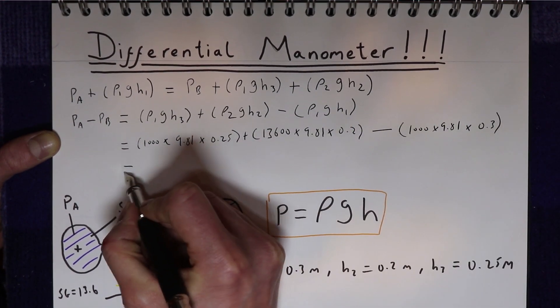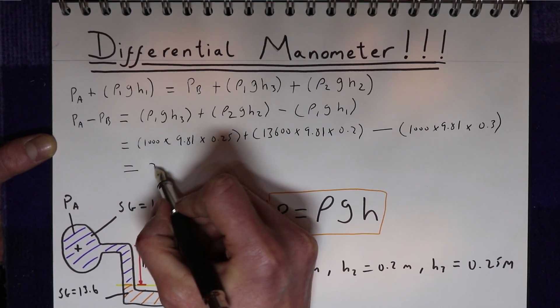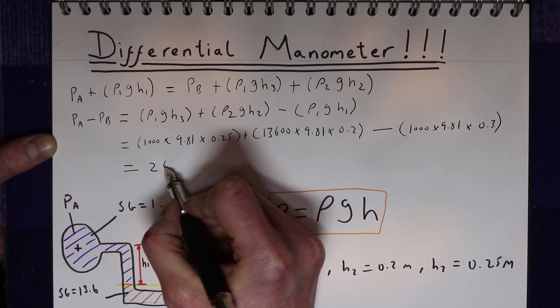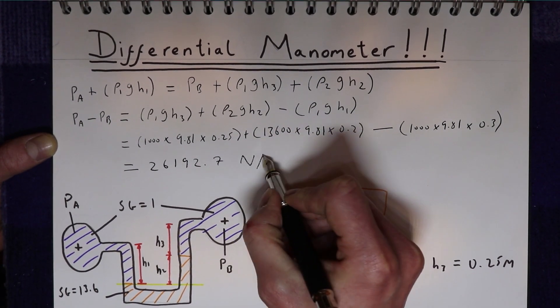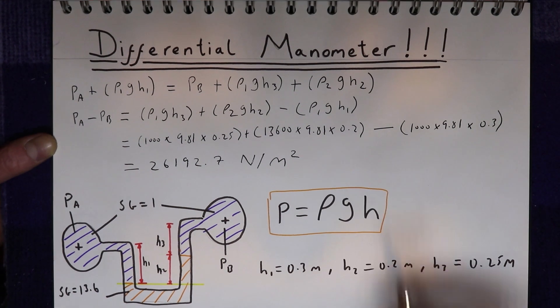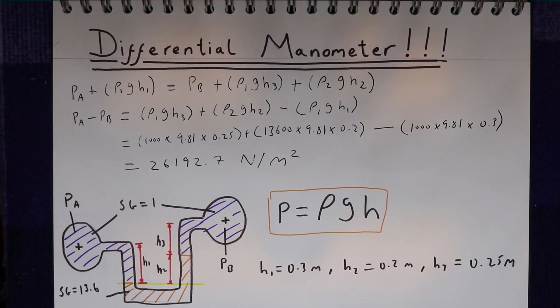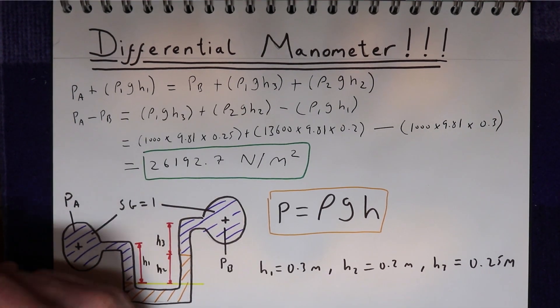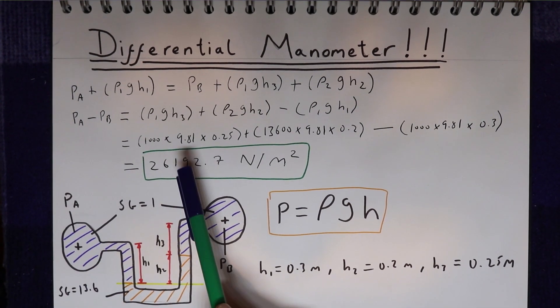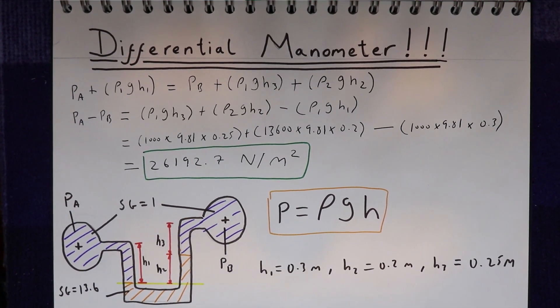And if you put all of that into a calculator it will give you a pressure difference of 26192.7 Newtons per meter squared. So what we're saying here is that the pressure difference between these two pipes is this value, or that pressure A is this amount of pressure more than pressure B.